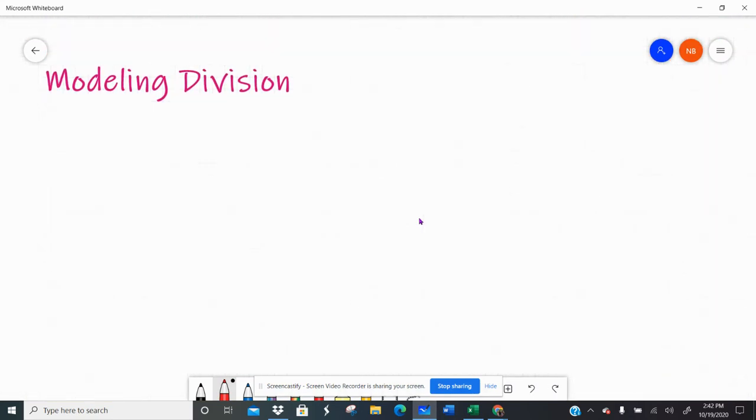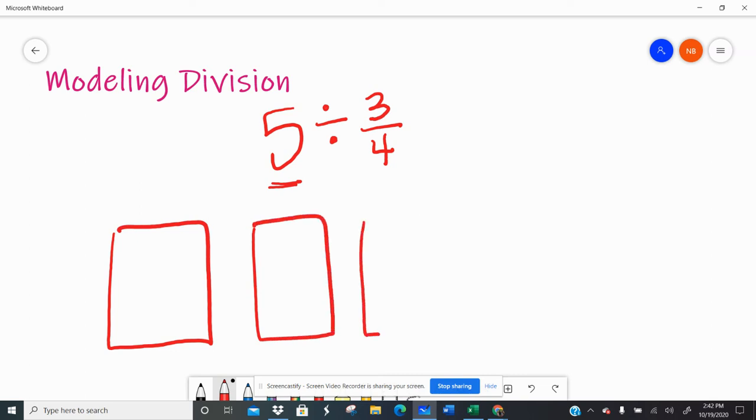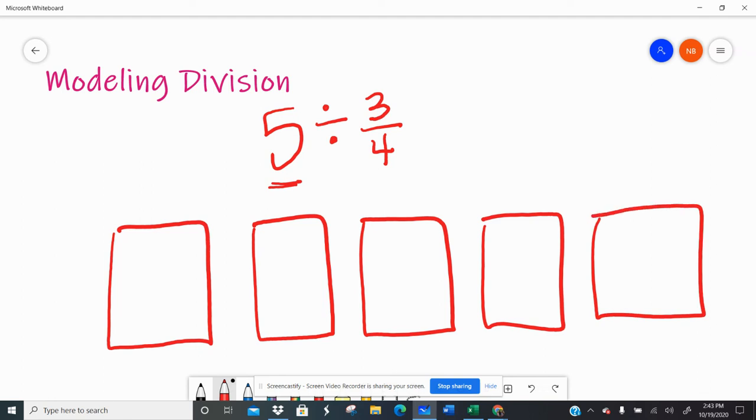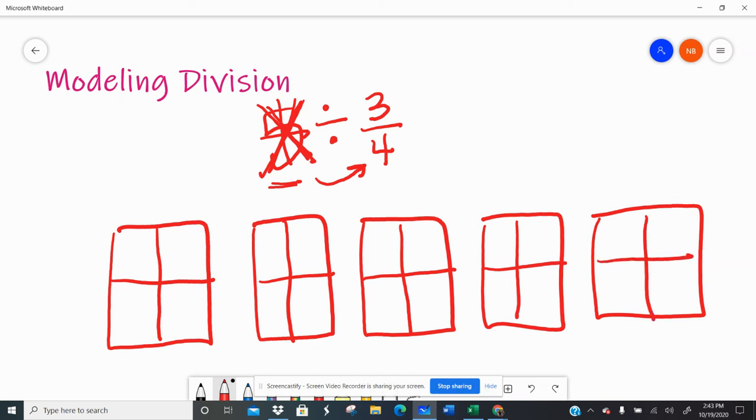But what about modeling division? When you model division, say I have five divided by three fourths. So I'm going to draw a picture. I have five. So I'm going to draw five things. One, two, three, four, five. I get rid of that number like a bad ex-boyfriend, bad ex-girlfriend. Don't want to deal with that number anymore. And then I travel to the four. I'm going to split each of them into fourths. So now each thing has four pieces. Once I'm done with that, I break it like a bad ex-boyfriend, bad ex-girlfriend, I get rid of it.